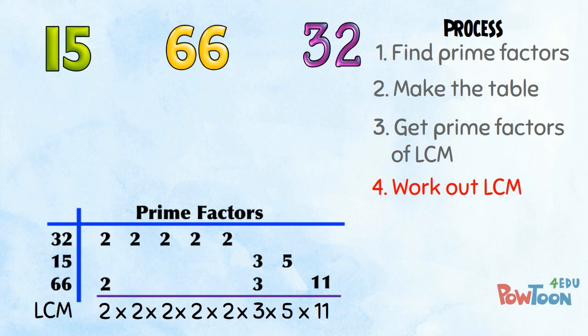we work out the value of our LCM as shown by the prime factors we have here. 2 times 2 is 4. Times 2 is 8. Times 2 is 16. Times 2 is 32. Times 3 is 96. Times 5... OK,